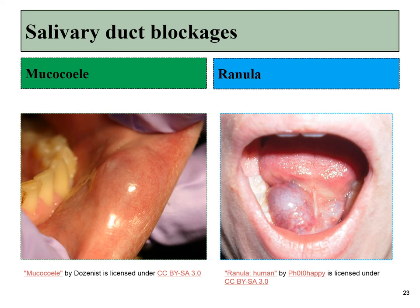Here are some sialoliths still in situ. We see that saliva is backing up and causing the oral mucosa underneath to bulge. The distinction between these two conditions is mainly in size: a mucocele is the blockage of a minor salivary gland, whereas a ranula is a larger blockage in one of the major salivary glands.